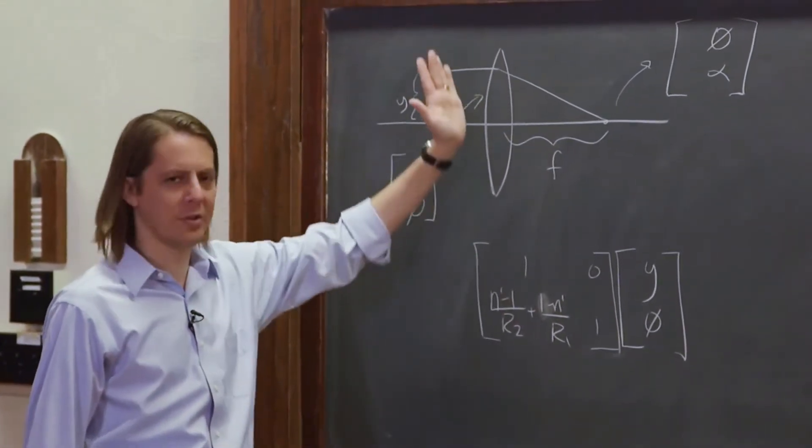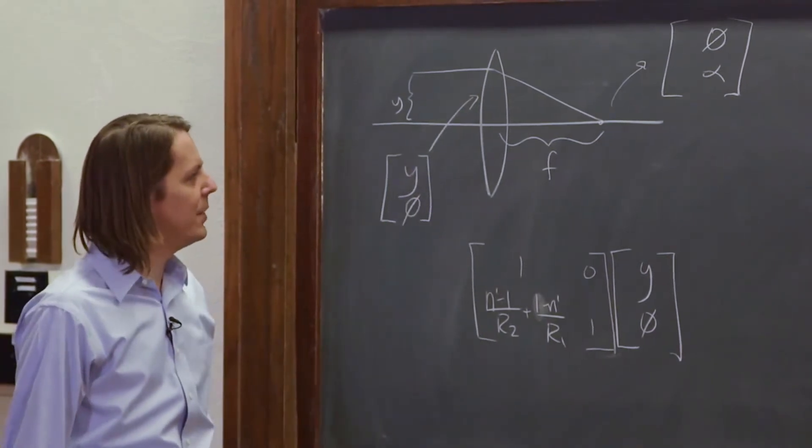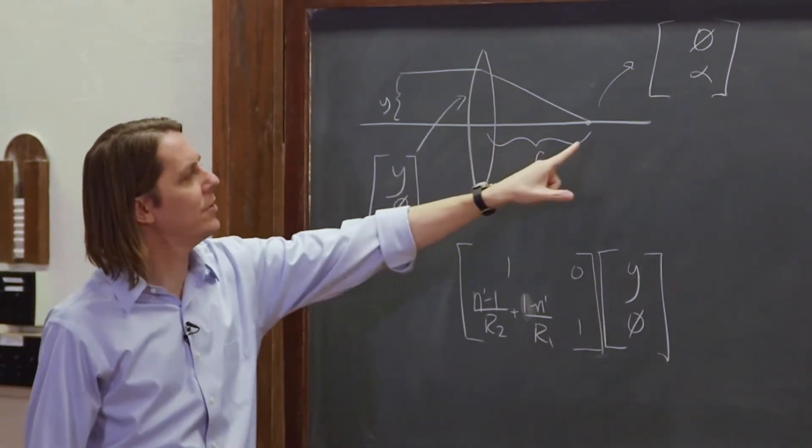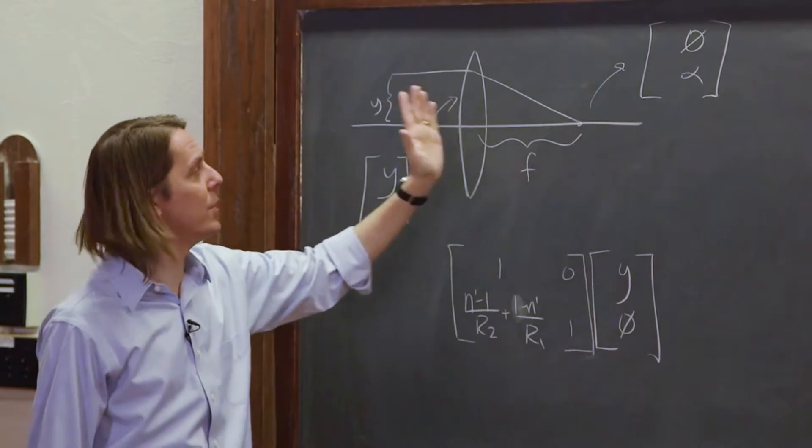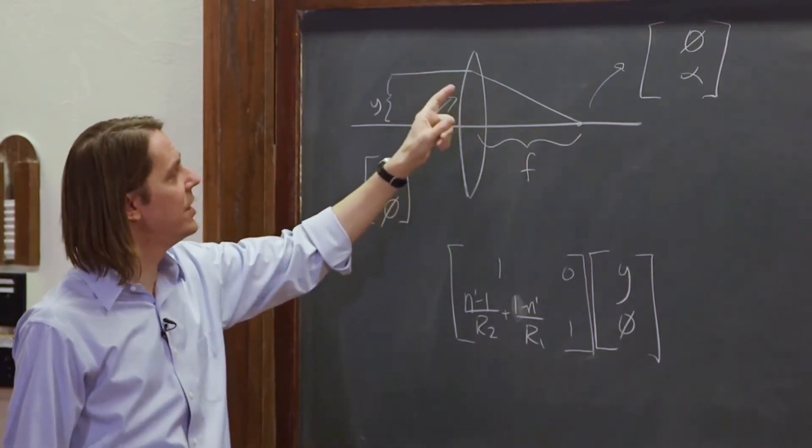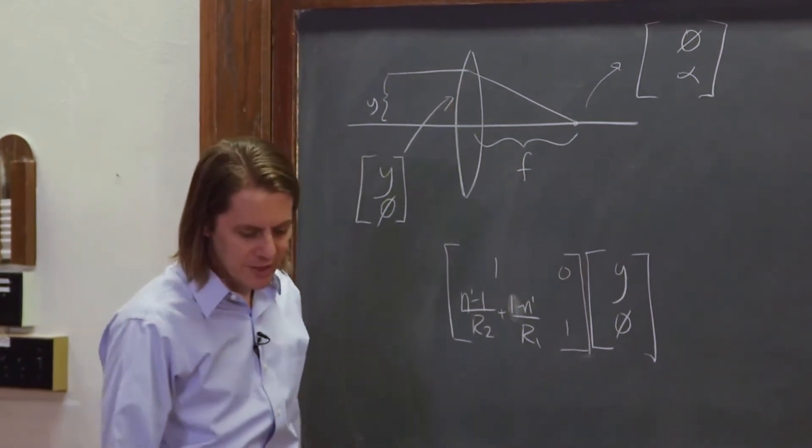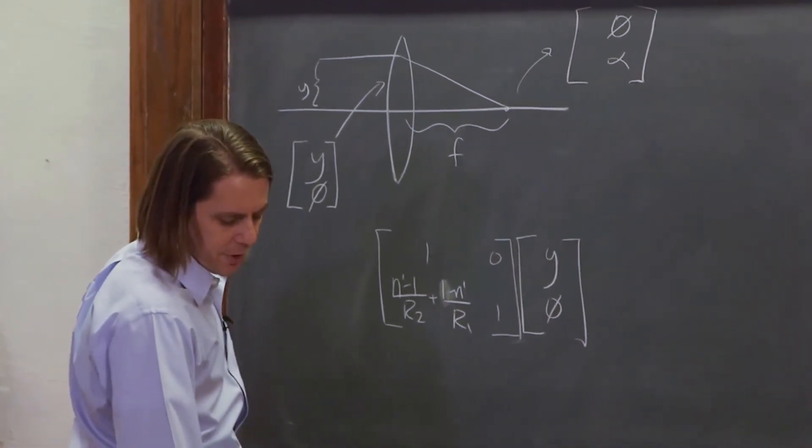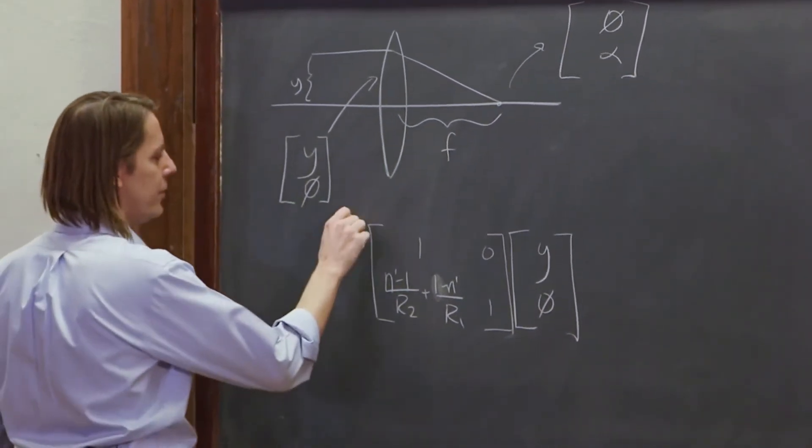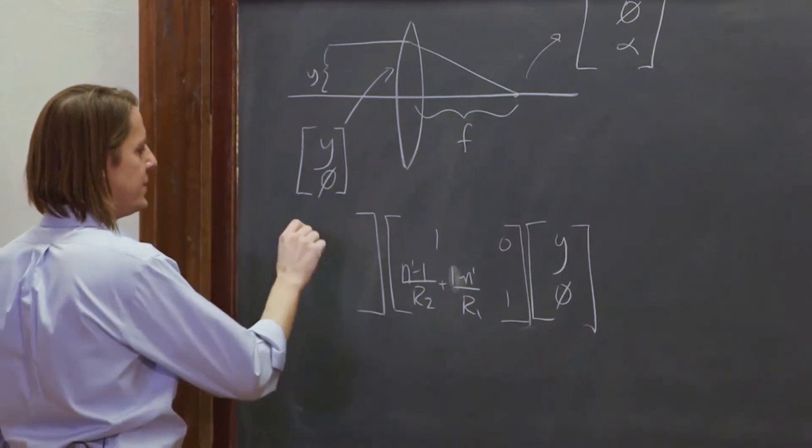That's the refraction through the entire lens. That's the thin lens matrix. But then we're not finished, we still have to translate to get to here. When it goes through the lens, all it really does is change the angle. Your height would still be y. So to get it to go down to 0, we need to also go through a translation matrix of distance f.